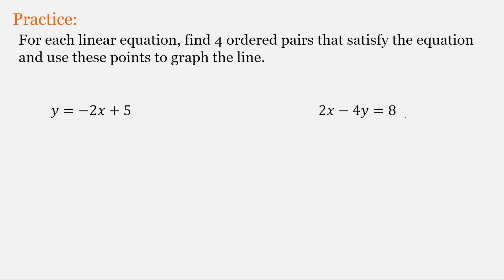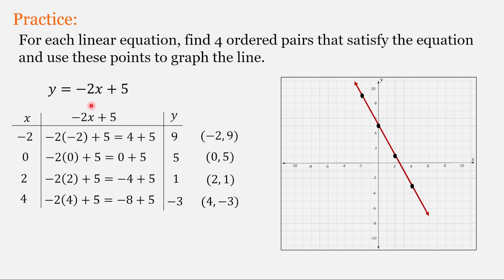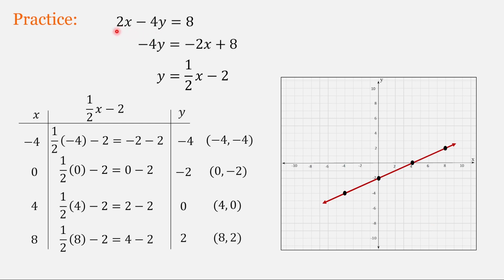A great way to learn is to practice on your own. The first practice problem is very similar to the second example we did — plug in different values for x to generate y values and ordered pairs, then plot them to get the graph. For the second problem, the equation is in standard form, so first convert it to slope-intercept form (y = ...), then evaluate at four different x values to get the ordered pairs that generate the graph. Continue practicing graphing linear equations from ordered pairs, and I'll see you in the next video.